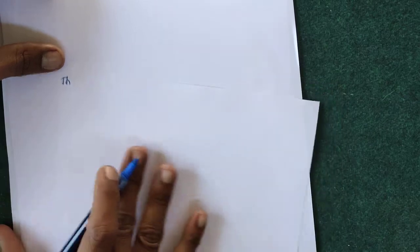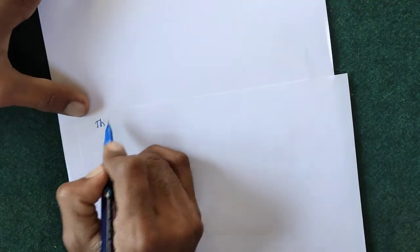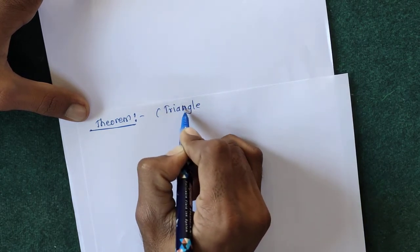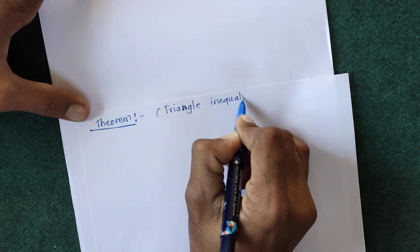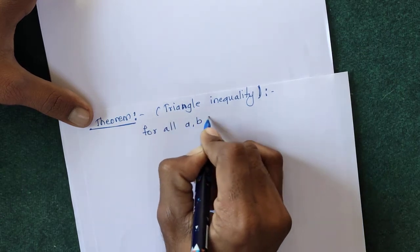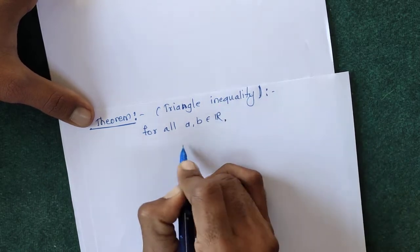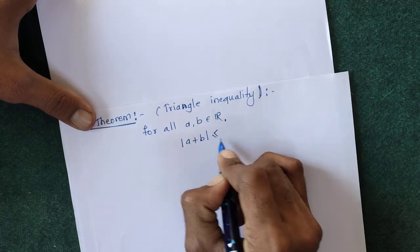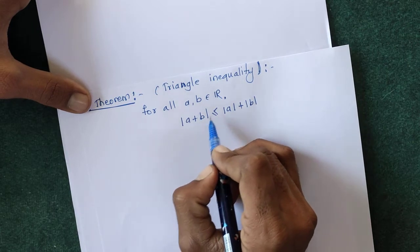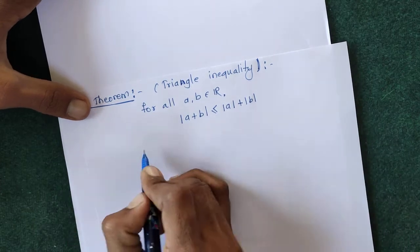Now we will see another important theorem: the Triangle Inequality. The statement is: for all a, b belonging to ℝ, mod(a + b) is less than or equal to mod a plus mod b. This triangle inequality is an important result.